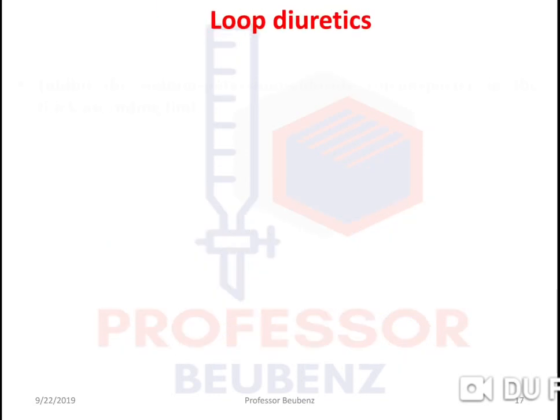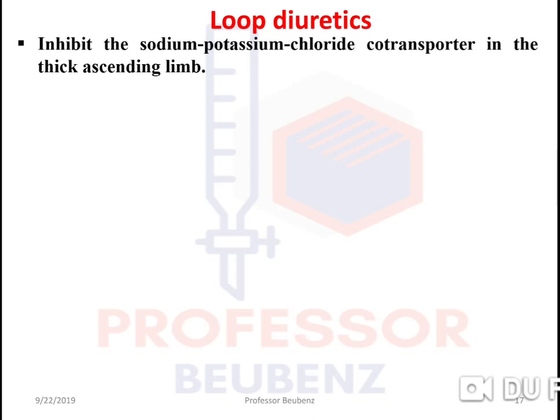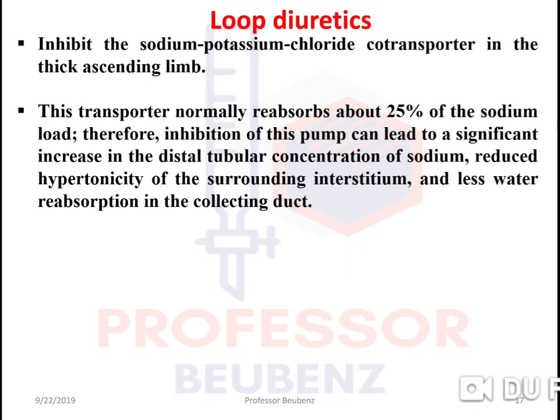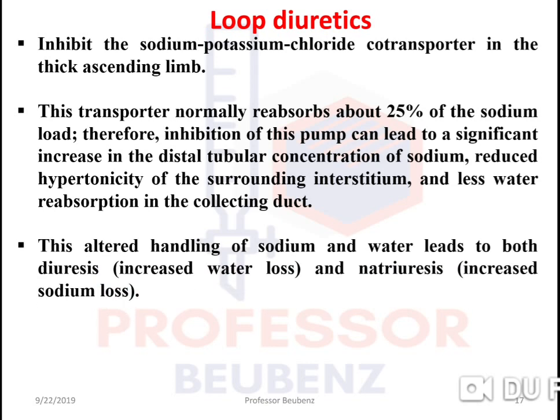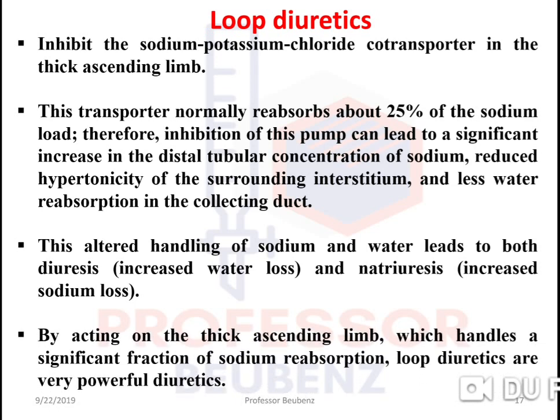Loop diuretics: mechanism of action involves inhibiting the sodium-potassium-chloride co-transporter in the thick ascending limb (TAL). This transporter normally reabsorbs about 25% of the sodium load. Inhibition of this pump leads to a significant increase in distal tubular sodium concentration, reduced hypertonicity of the surrounding interstitium, and less water reabsorption in the collecting duct. This leads to both diuresis (increased water loss) and natriuresis (increased sodium loss). Because the thick ascending limb handles a significant fraction of sodium reabsorption, loop diuretics are very powerful diuretics.